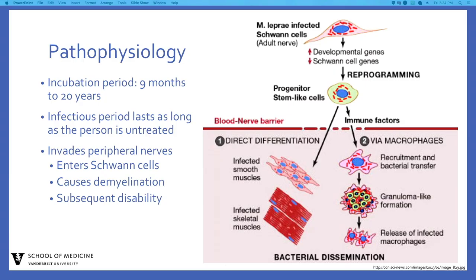The Schwann cells are a major target for infection by Mycobacterium leprae, leading to injury of the nerve, demyelination, and consequent disability. Binding of Mycobacterium leprae to the Schwann cells induces demyelination and loss of axonal conductance. After the Schwann cell is infected, it causes disruption of the blood-nerve barrier.